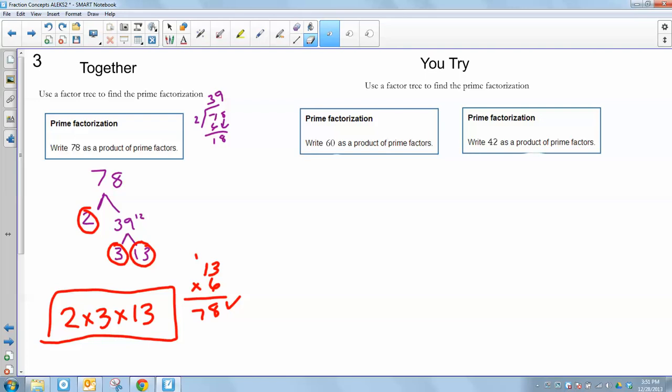All right, welcome back. Let's take a look at our prime factorization for 60. Now, there can be multiple ways to get here. I used the most common thought, the first thought that came to my mind was it ends in a zero. So I know that 6 times 10 is 60. So I chose 6 and 10.